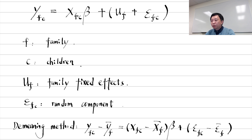Here, we do not have the time dimension. Instead, the panel variable is the family and the time variable becomes the descendants within each family. They could be siblings or cousins. Let me show you how to apply the fixed effects methods to this family structure.